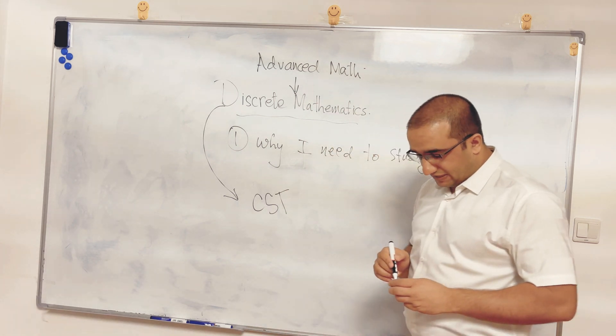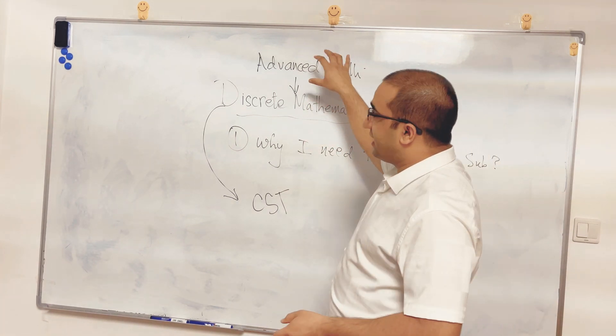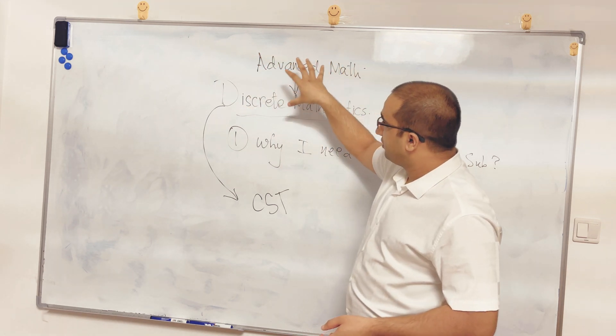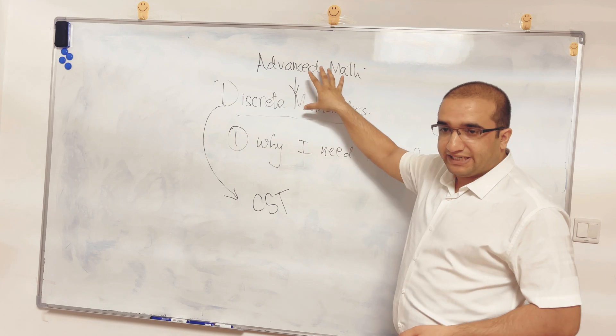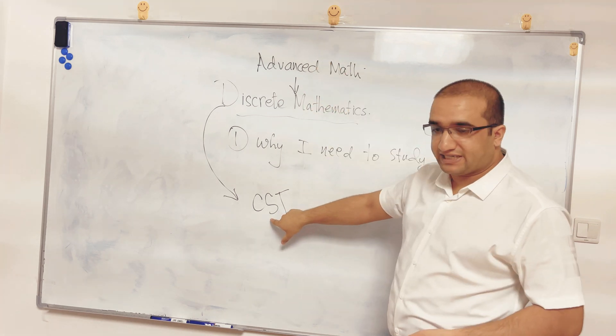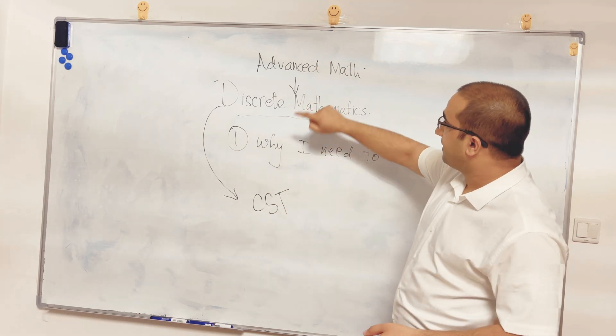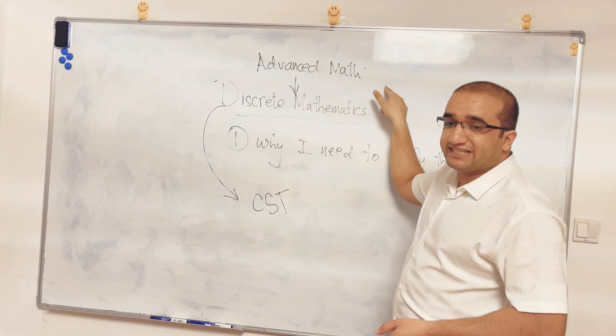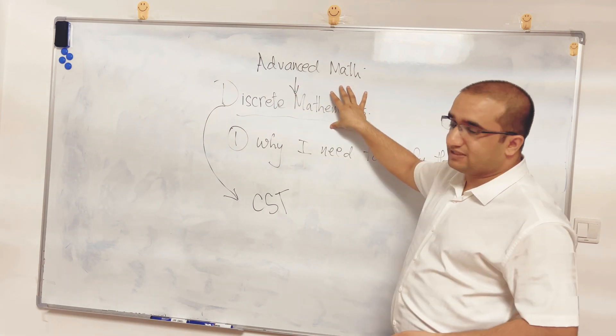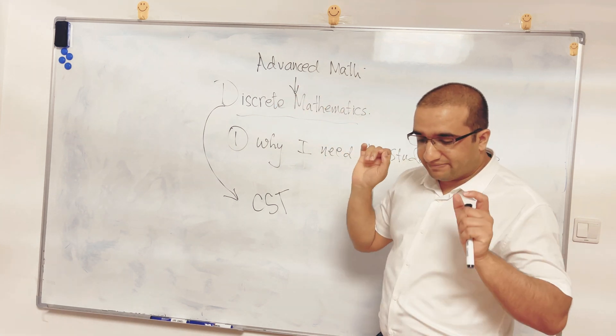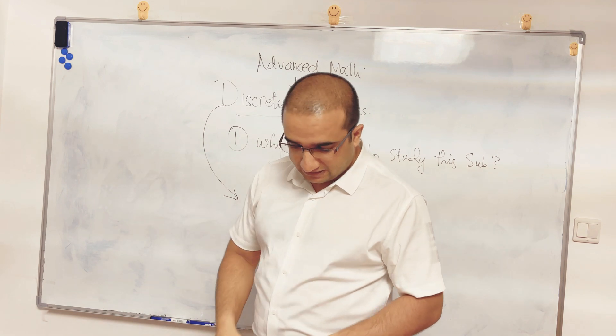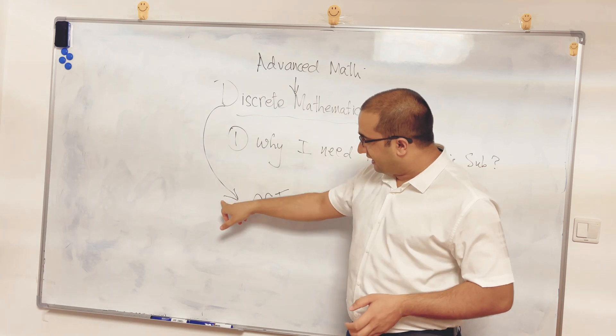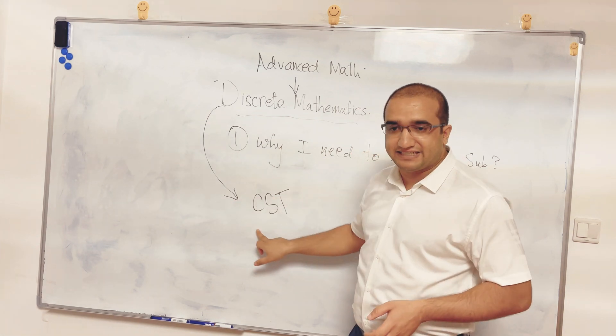So actually, first you made some foundation of mathematics. And now there is a pillar in between your major field, which is the computer science technology, and the basic mathematics. There is a bridge, which is discrete mathematics. This bridge will build a mathematical maturity in yourself, so that you can professionally enter into the computer science and technology.